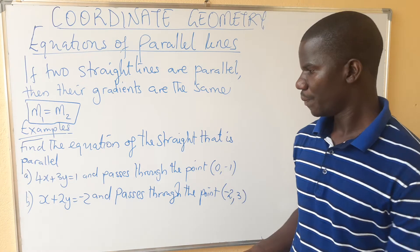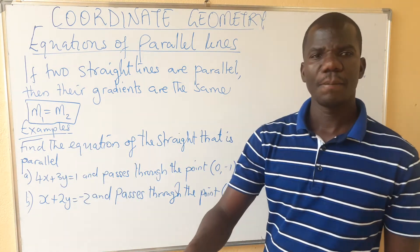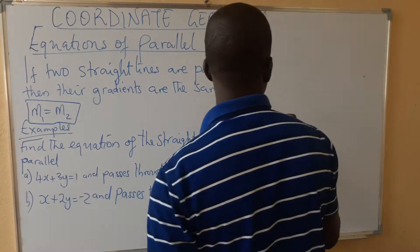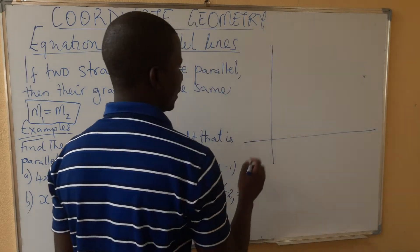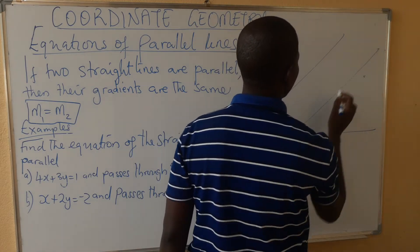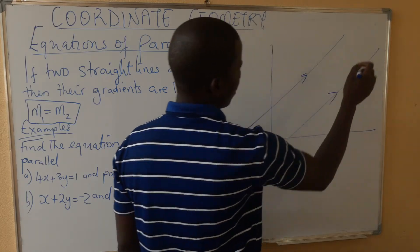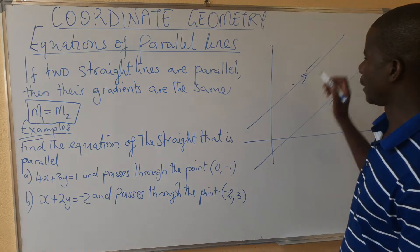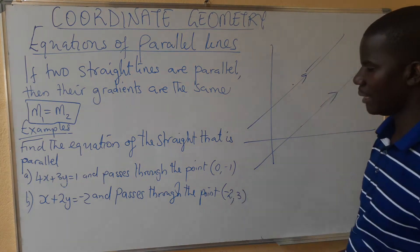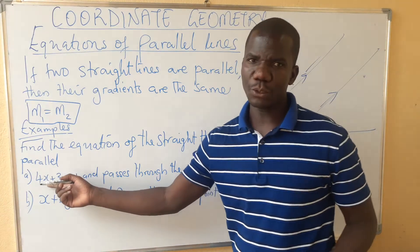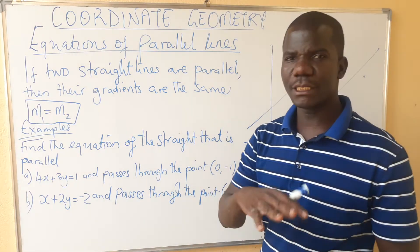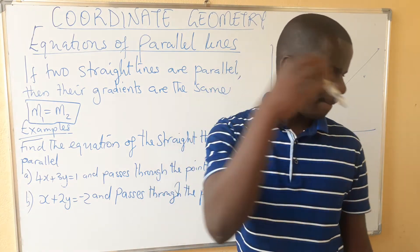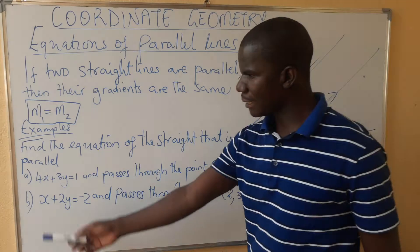Parallel lines have equal gradients. For instance, we want to write the equation of a line that is parallel to a given equation. We have the given equation, and a second line parallel to it passing through some given point. This equation will give us the gradient because we are not given the gradient directly, but we are given a point. To write the equation, we need the gradient. The gradient we get from the first equation is the same gradient we will use to find the equation of the other line.